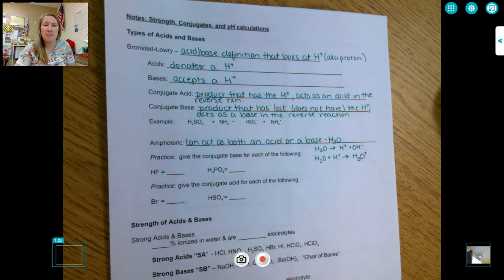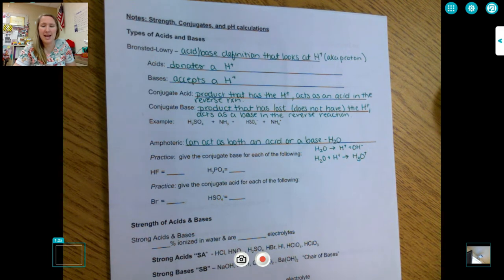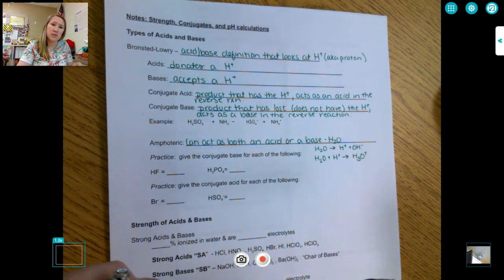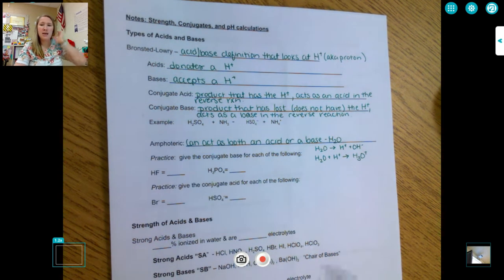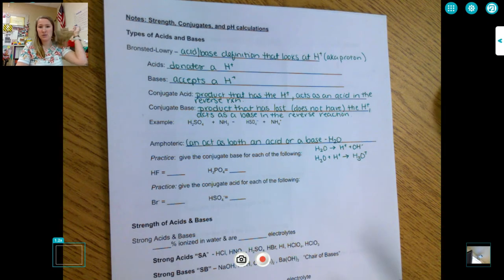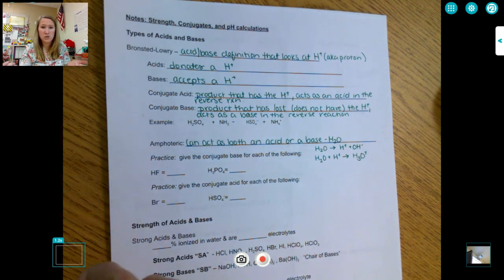Then what we can do is we can make in our products a conjugate acid. So this is the product that has the hydrogen ion, and because it has that acidic hydrogen ion or proton, if you were to go in the reverse direction, then that would act as the acid in the reverse direction. So we can say that we've made it into an acid, so we've conjugated it into an acid.